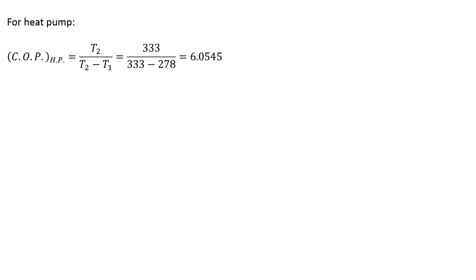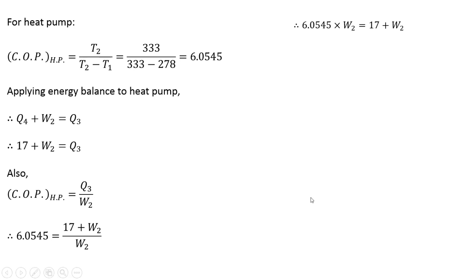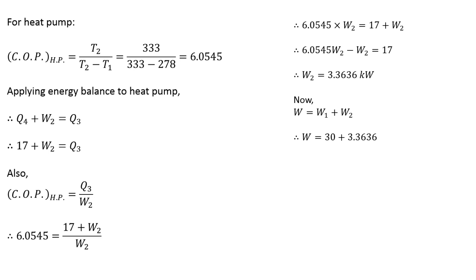For the heat pump, the coefficient of performance (COP) = T2 / (T2 − T1), which gives us the COP value. Applying the energy balance with Q4 = 17 kW, COP is also equal to heat rejected to the sink divided by work input W2. Substituting and rearranging by cross-multiplying, we get W2 = 3.3636 kW. Then W = W1 + W2 = 30 + 3.3636 = 33.3636 kW, which is the total work developed by the heat engine.